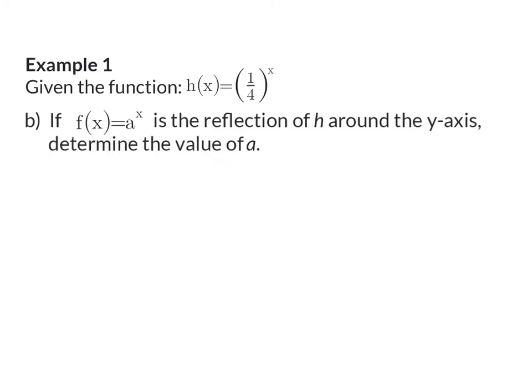Question B. If f(x) is the reflection of h around the y-axis, determine the value of a. This is a bit of revision of grade 10 and 11 work, and you need to know that reflection around the y-axis means that the sign of x will change. So if x's sign will change in the equation that we have at the moment, we will have y equals a quarter to the power of minus x. And to get rid of that negative exponent, we can rewrite this as 4 to the power of x. And this means that the value of a is 4.